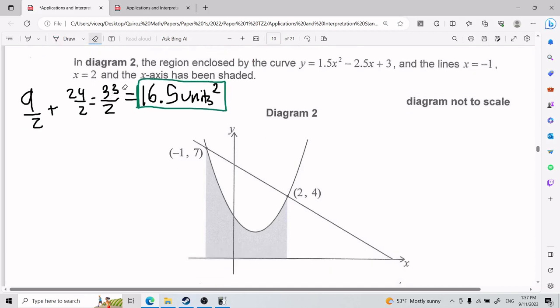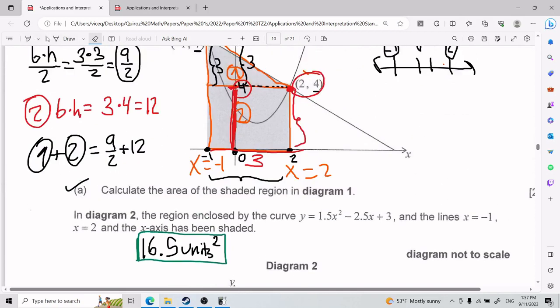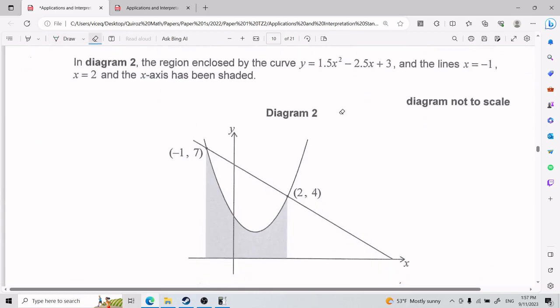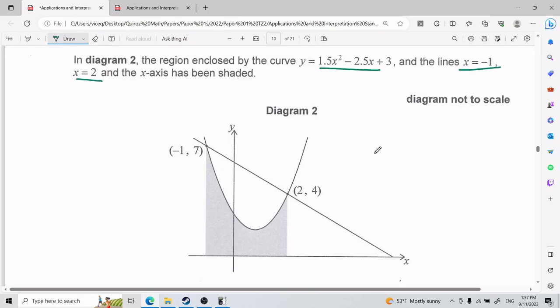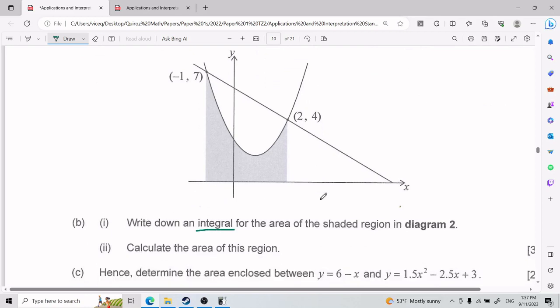So that is for part A. Now we can move on. They tell us that in diagram 2, the region enclosed by the curve and the lines have been shaded. Write down an integral for the area of the shaded region in diagram 2. So before I jump into it, this is actually simpler than what you think. But I do think it's important for you to understand what the heck you're even doing. An integral is basically area under the curve. An integral helps you find the area under the curve.